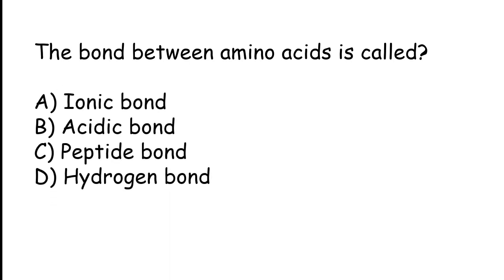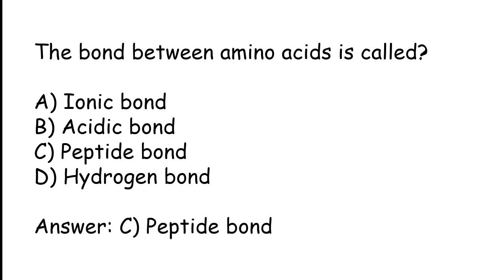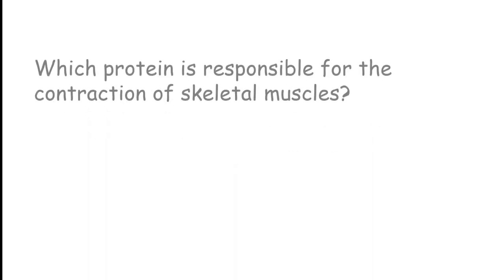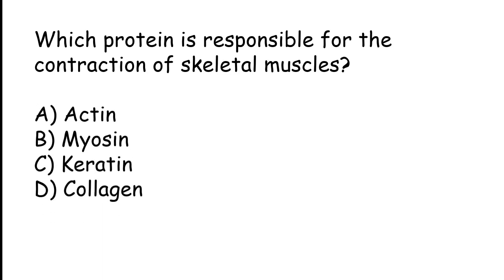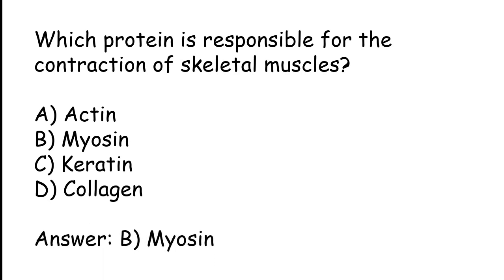The bond between amino acids is called: ionic bond, acid bond, peptide bond, hydrogen bond. The correct answer is option C: the bond between amino acids is called the peptide bond. Which protein is responsible for the contraction of skeletal muscles? Options: actin, myosin, keratin, collagen. The correct answer is option B: myosin.